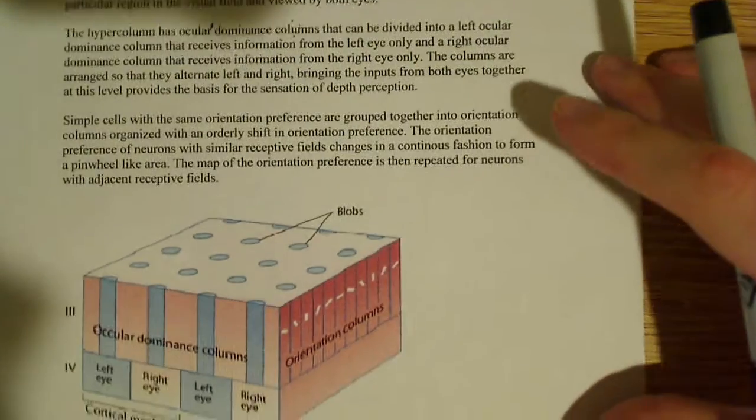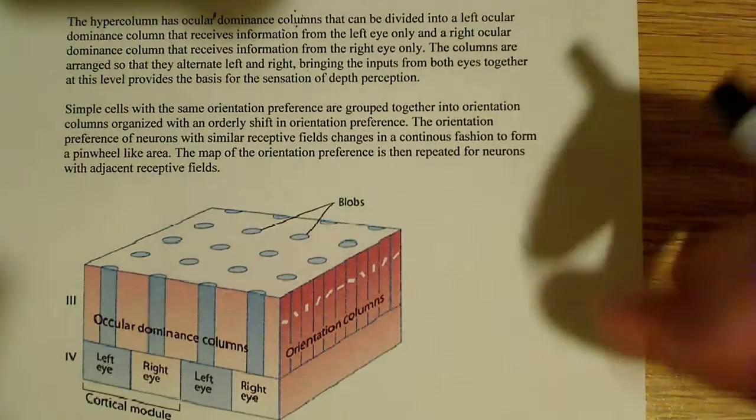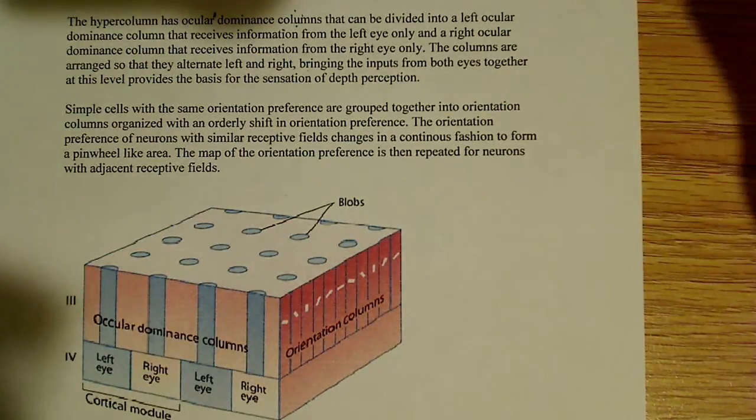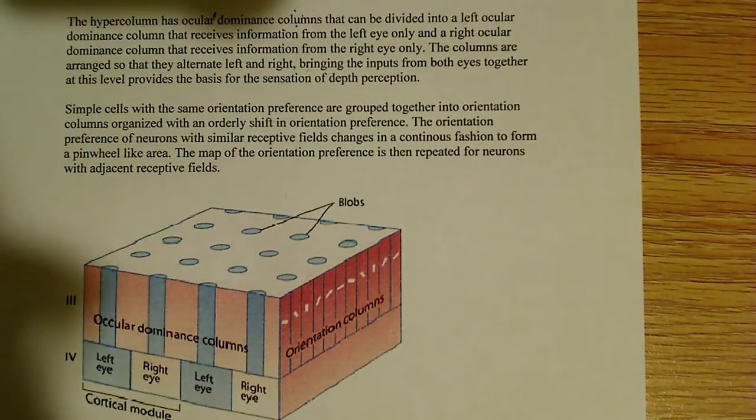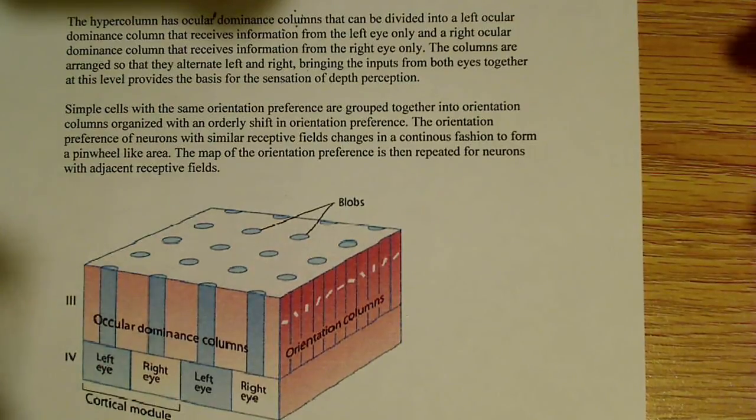Now, there's another set, there's another part to the hypercolumn, and there are simple cells which, with the same orientation preference, are grouped together into what are known as orientation columns. So simple cells with the same orientation preference are grouped together into orientation columns,